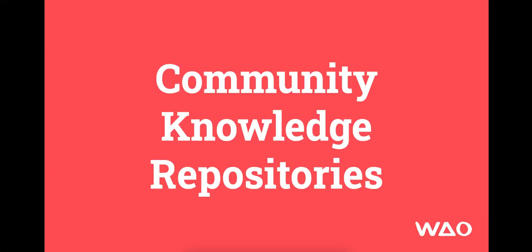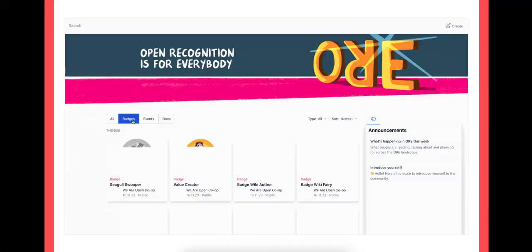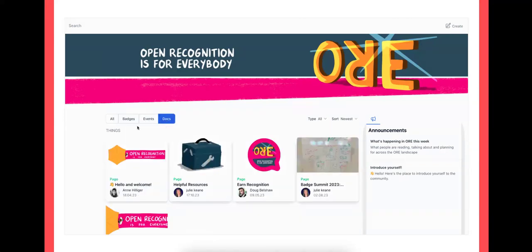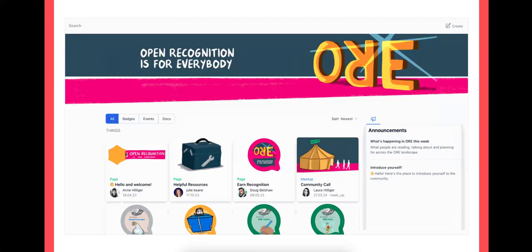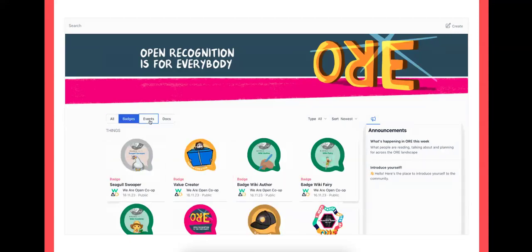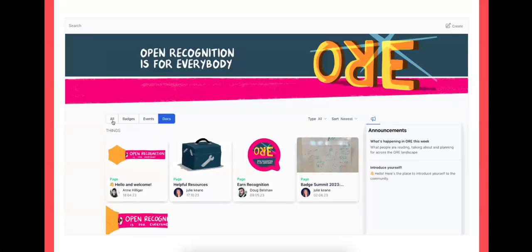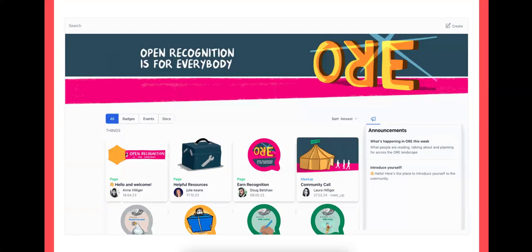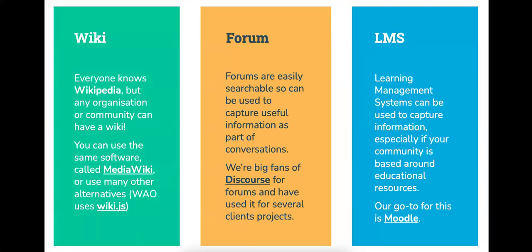Now let's talk about community knowledge repositories — how and where do you collect your knowledge in your community? In the Open Recognition community or the Participate community, everything is collected in one space with badges, events, and docs. But sometimes you don't want just one space. If you have a lot of things to document that people can read through, it's recommendable to use a wiki — the most well-known example being Wikipedia.